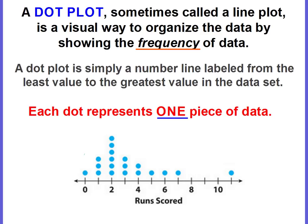A dot plot, sometimes called a line plot, is a visual way to organize the data by showing the frequency of the data. A dot plot is simply a number line labeled from the least value to the greatest value in the data set.